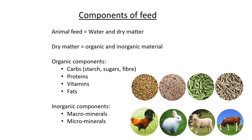The organic components we find in feed include carbohydrates — like starch, sugars, and fiber — which all contain carbon. These are very good for the intestines. Then there are proteins, vitamins, and fats, which also have carbon in them. The inorganic components of dry feed consist of macro and micro minerals — minerals that animals need either in large quantities (macro) or small quantities (micro).